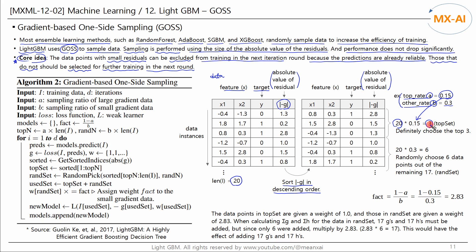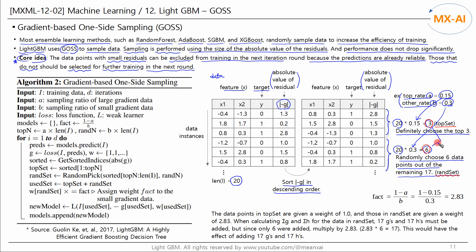This means that when sampling data, the top 3 data points with the largest residuals are definitely selected. Next, multiplying the total number of data points, 20, by the other rate 0.3 gives us 6. This means that 6 of the remaining 17 data points are randomly sampled. The top 3 data points are in the top set, and the other 6 are in the RAN set. Training is performed using these 9 sampled data points out of a total of 20.